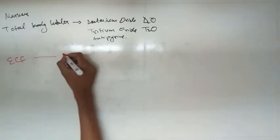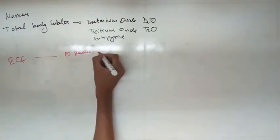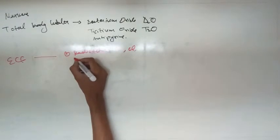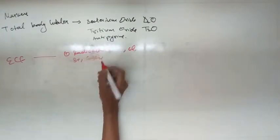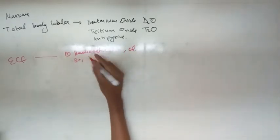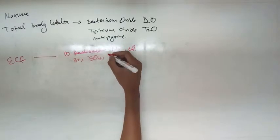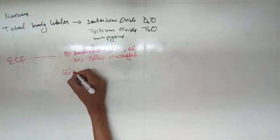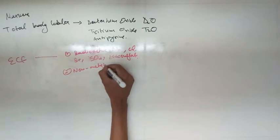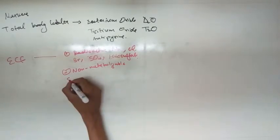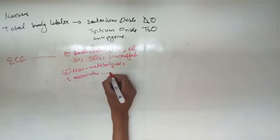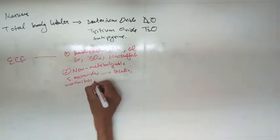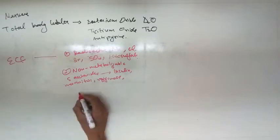To measure extracellular fluid, either radioactive sodium or chloride — all radioactive — are used: radioactive sodium, chloride, bromide, sulphate, and thiosulphate. These were the radioactive non-metabolisable substances, like for example inulin. Also used are mannitol, raffinose, and sucrose.